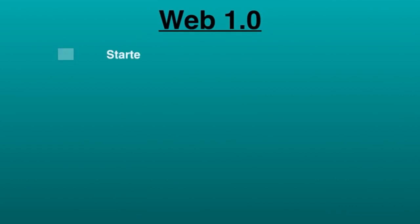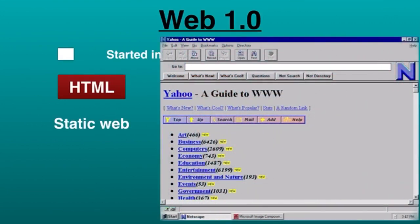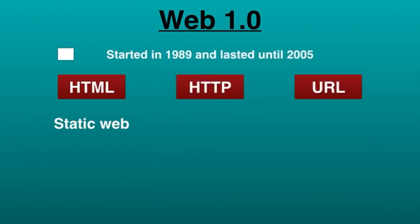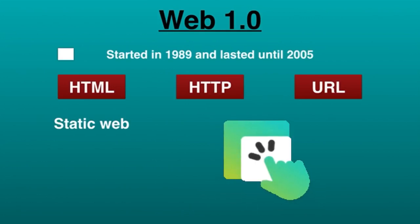Web 1.0 started in 1989 and lasted until 2005. The main technologies used in Web 1.0 were HTML, HTTP, and URL. It's also called the static web, which means the first and most reliable internet in the 1990s, despite only offering limited access to information with little or no user interaction.